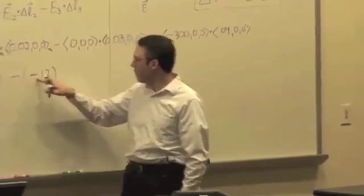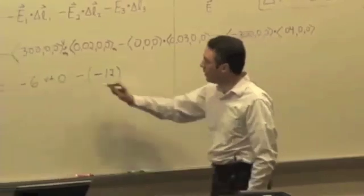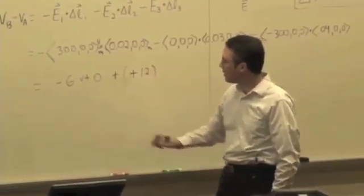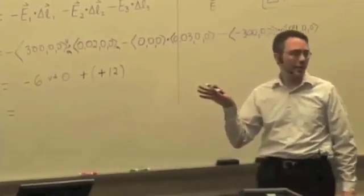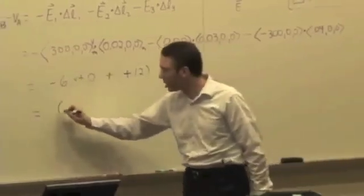And then if I have a minus times a minus, that's going to give me positive. So I end up with the total potential difference is 6 volts, positive 6 volts.